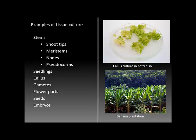Here are some examples, and there's a two-page chart in the text that discusses some of the tissues that can be propagated using tissue culture. These include stems, shoot tips, meristems, nodes, and pseudo-corms, which are all parts of stems that can be propagated.